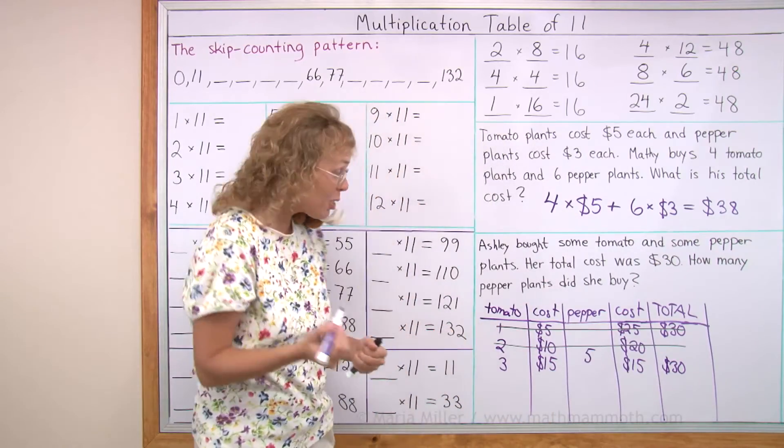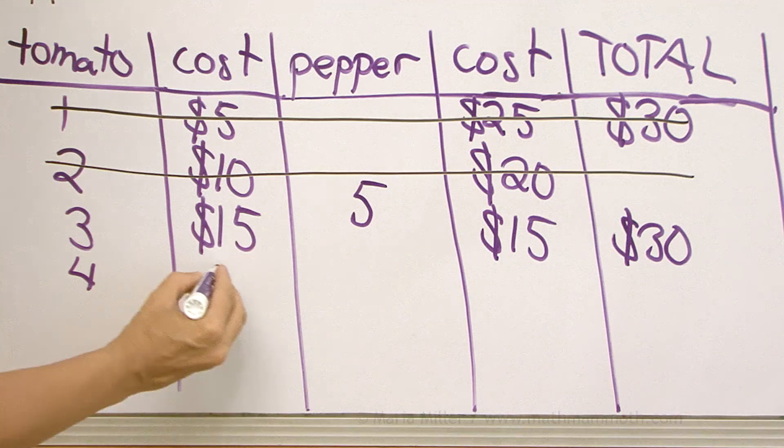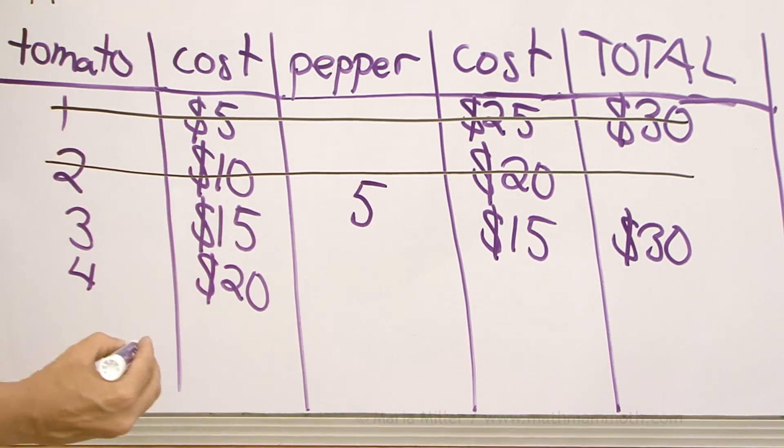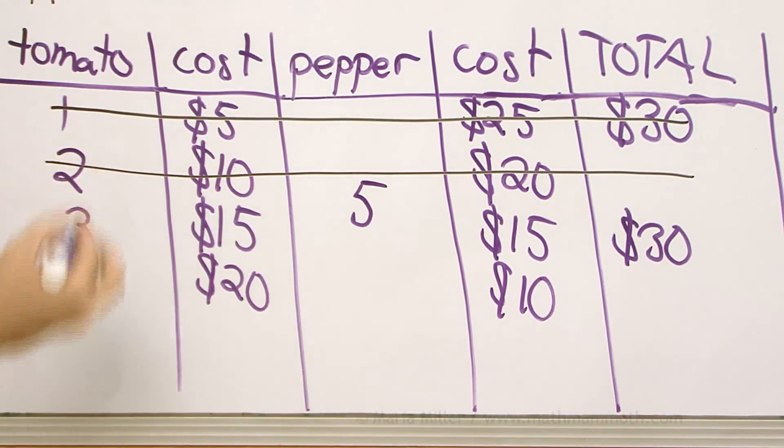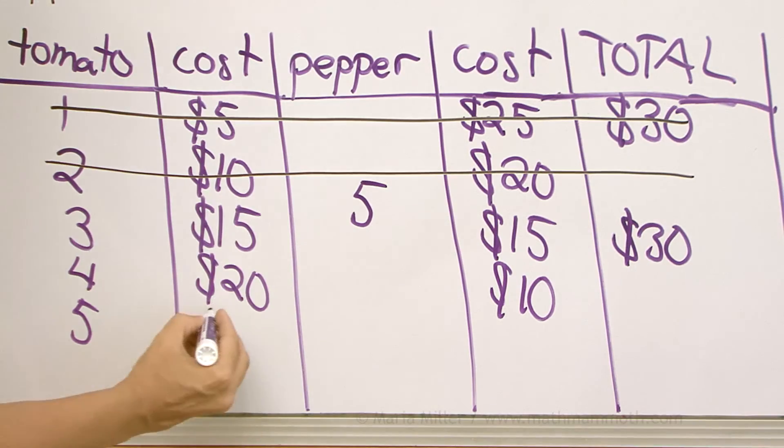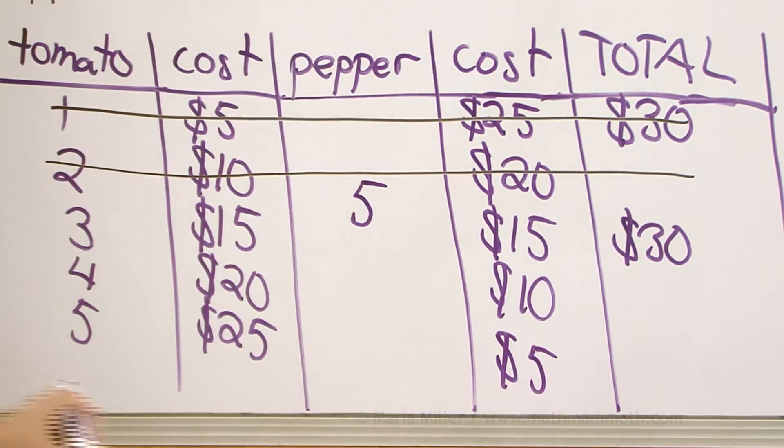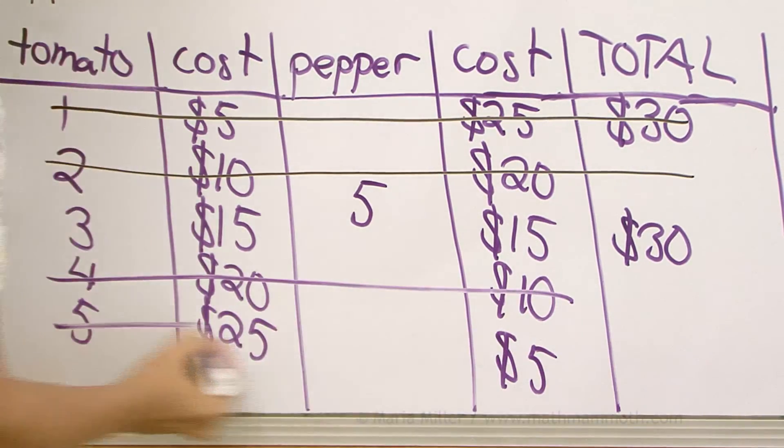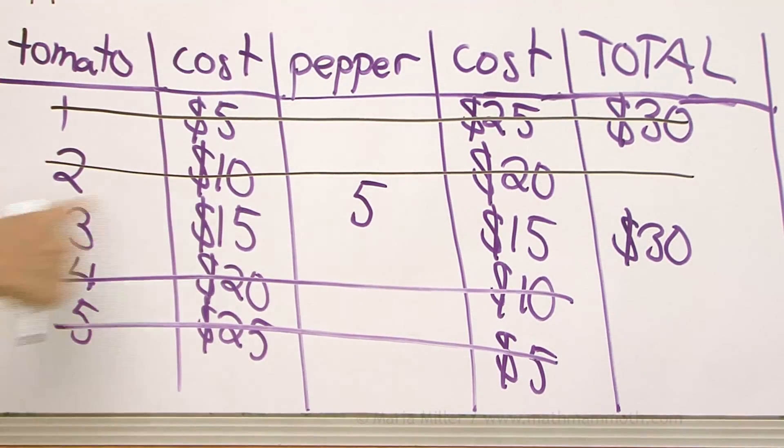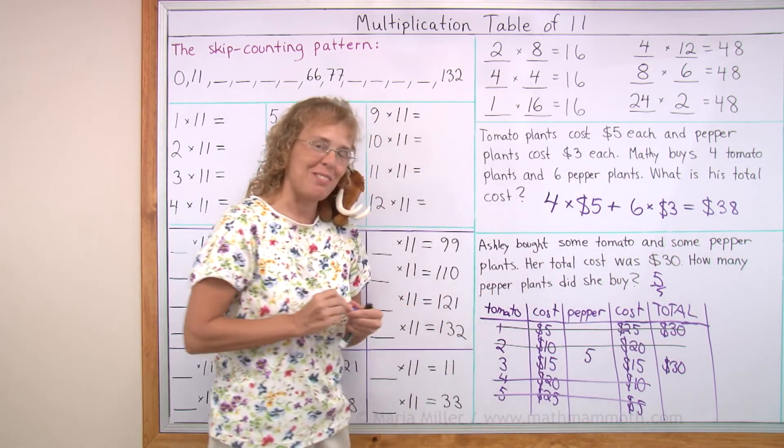But is there another solution? Maybe buying 4 tomato plants. That would be 20, and here 10. No, that will not work. And 5 tomato plants, 25 here and 5 over here. But this will not work either. So the only solution is over here, 3 tomato plants and 5 pepper plants. All done with this lesson.